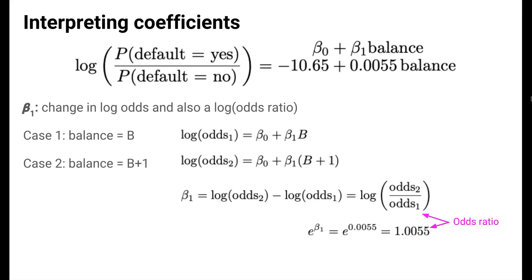So e to the beta 1 represents an odds ratio. The two odds being compared are the odds of defaulting for two cases who differ by 1 dollar in their credit card balance. The fact that the beta 1 coefficient is positive, and the odds ratio is greater than 1, indicates that as credit card balance increases, the probability, odds, and log odds of defaulting on a loan increase.